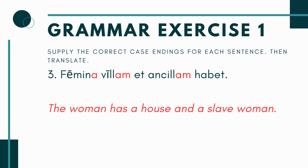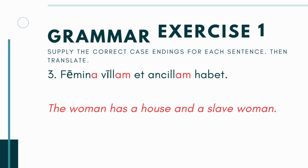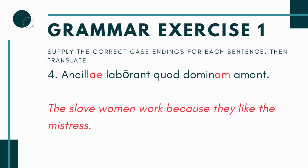Just to double check, try it another way. If I make villa my subject, I'd be saying the house has a woman and a slave woman — that doesn't make sense. Why would a house have anything? The same with ancilla: the slave woman has a woman and a house — it just doesn't add up. The conjunction et is connecting villam and ancillam, so it makes sense that the woman has two things. The only right answer is famina villam et ancillam habet.